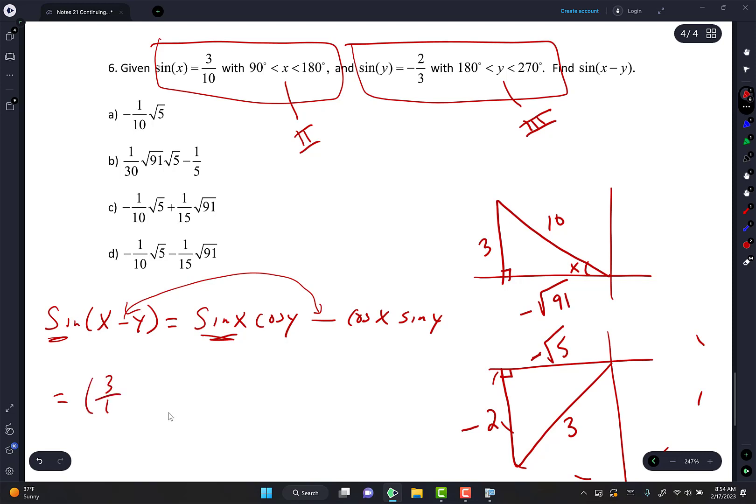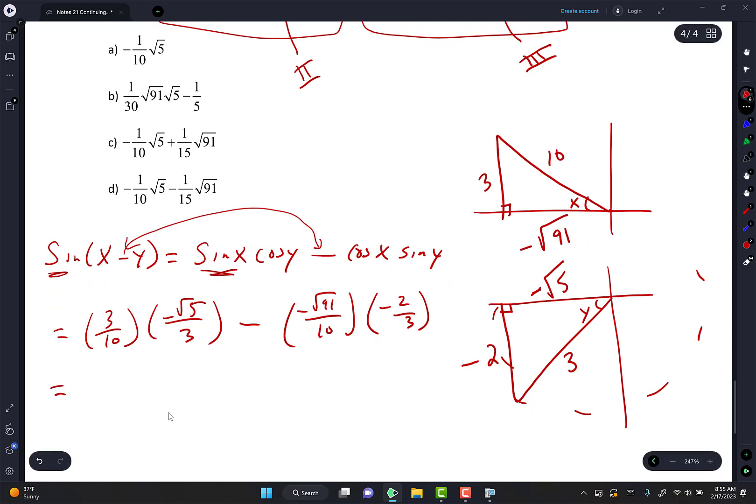Sine X, 3 tenths. And then it's cosine Y. This is my Y here. Did they give me cosine Y? Nope. Here's my Y. So cosine Y is negative square root of 5 over 3 minus cosine X is negative square root of 91 over 10. And then sine Y is negative 2 thirds. Now we just simplify. Positive times the negative is a negative. Negative 3 square root of 5 over 30 minus, negative times the negative is a positive, but I have a minus here, so it's going to stay the minus here. And we're going to write 2 square root of 91 over 30 as well. Are we still okay?